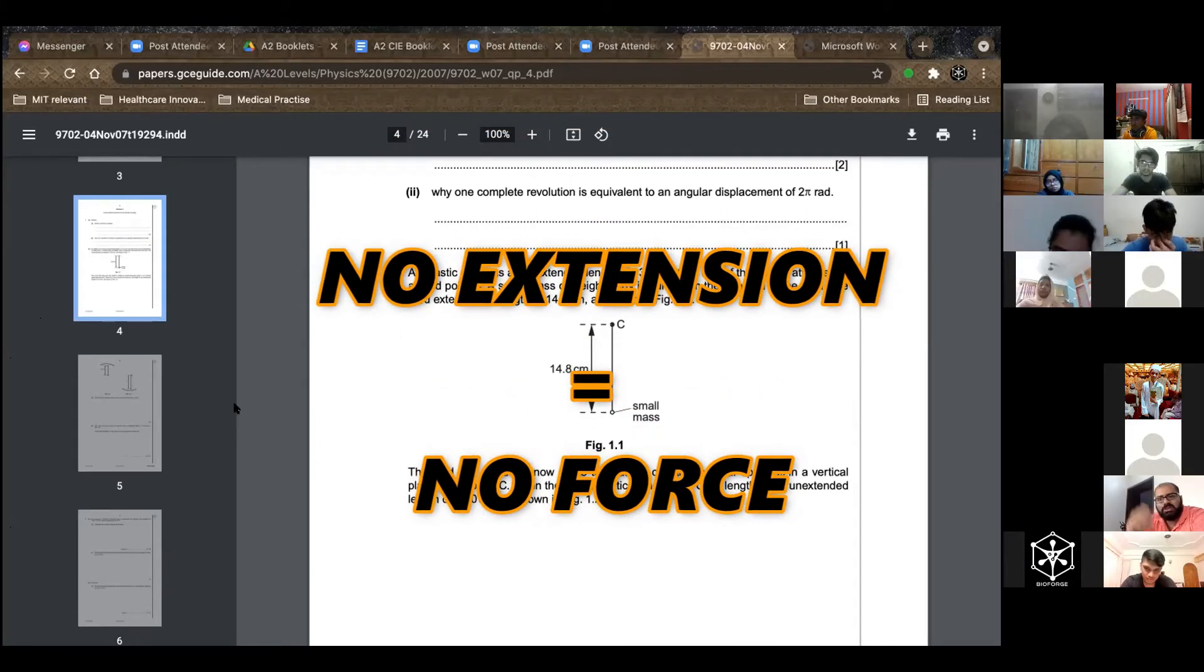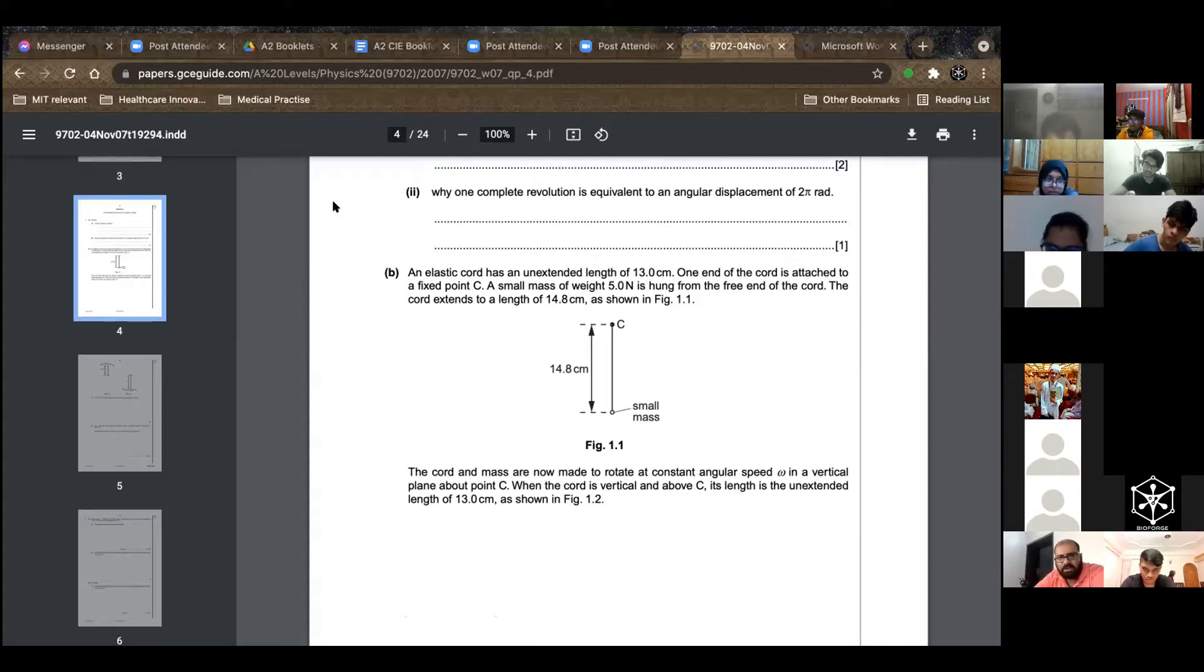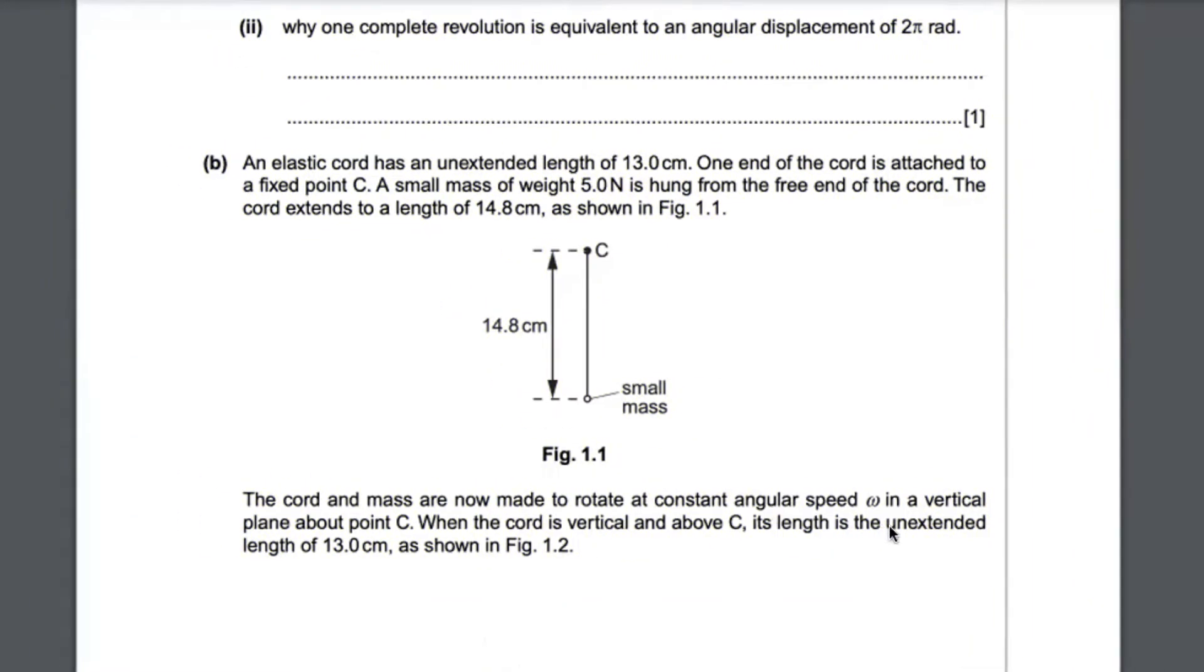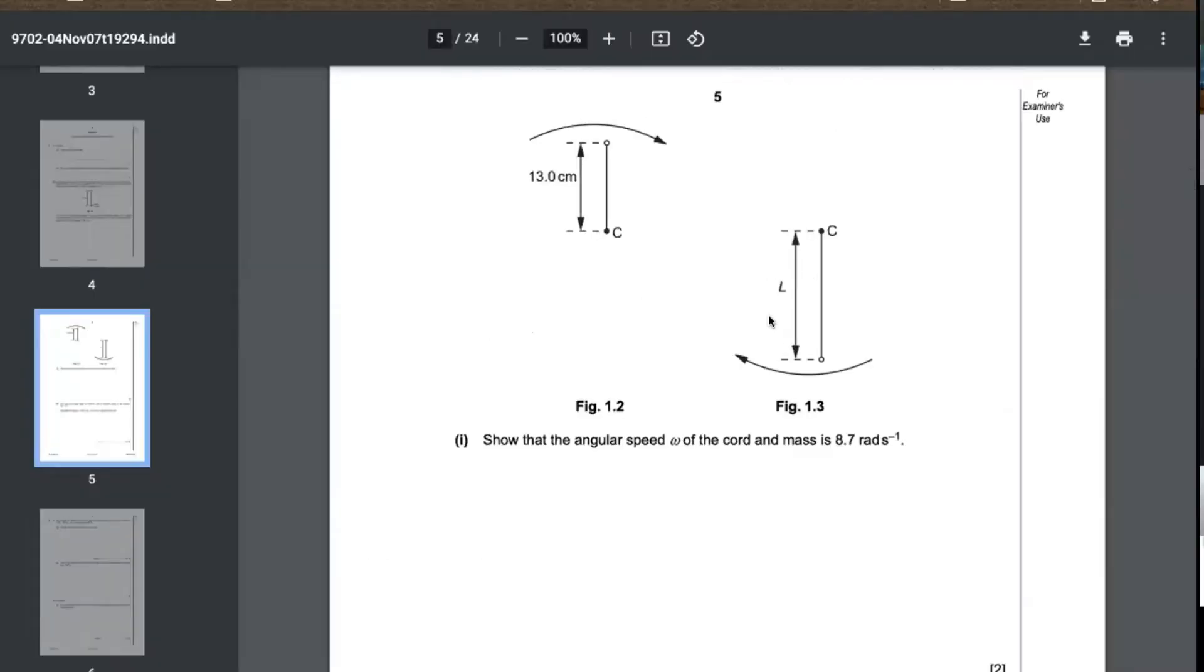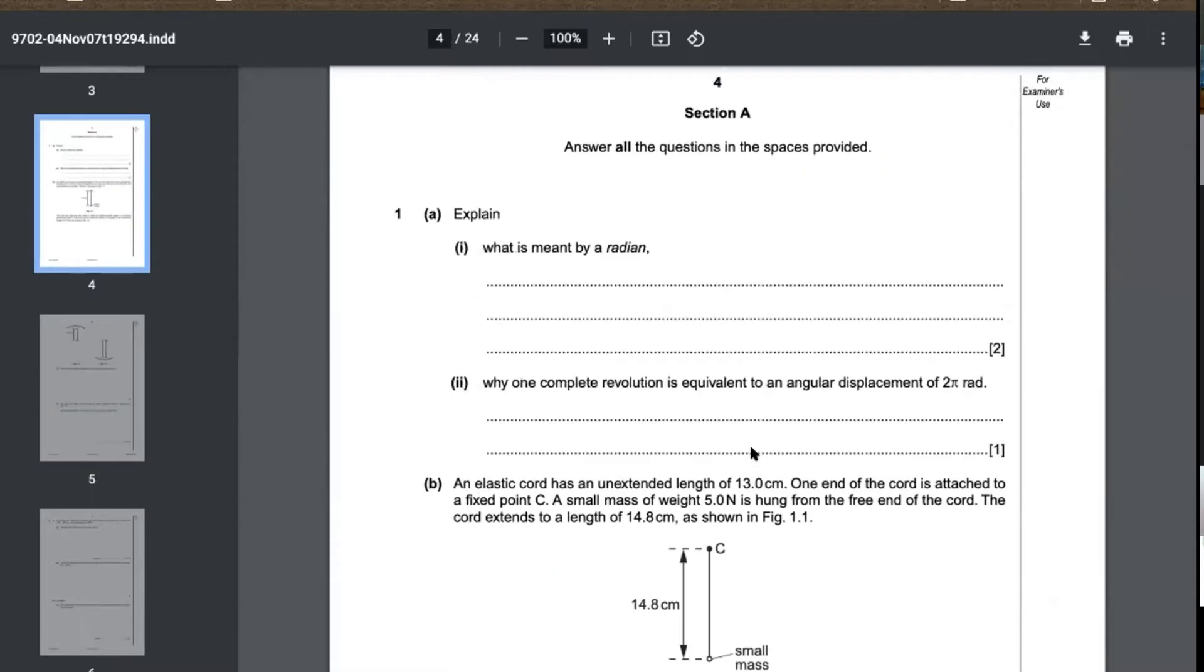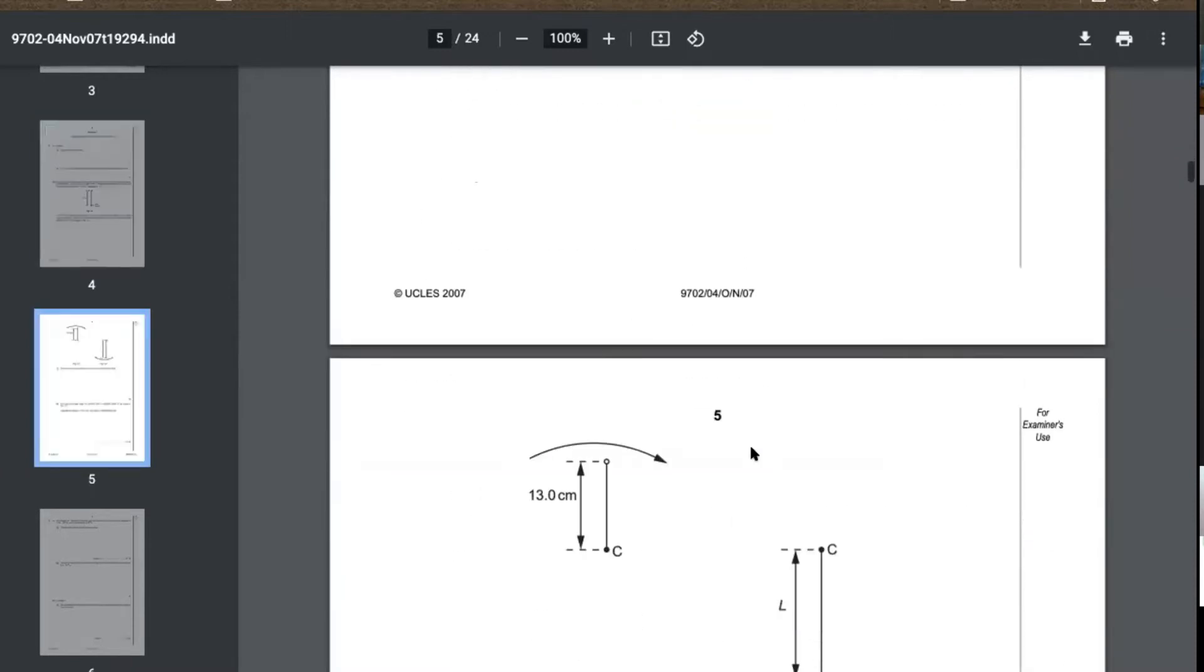At the highest point there is no extension, so there is no additional tension force at that point. The centripetal force is just the weight of the mass, basically 5 Newtons. The un-extended length is 13 centimeters, so 5 Newtons causes an extension of 1.8 centimeters. At the lowest point it's not 14.8, it's gonna be more than 14.8.